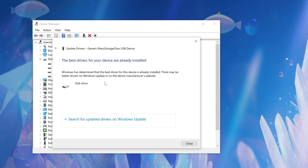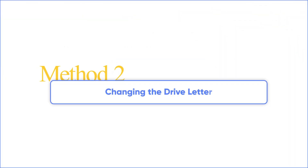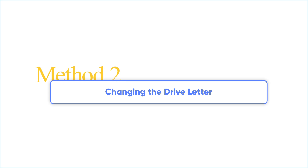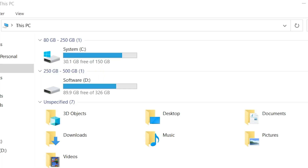Method 2: Changing the Drive Letter. In Windows, USB drives are assigned drive letters. If there's a conflict with an existing drive letter, your USB drive might not appear.